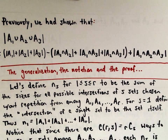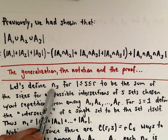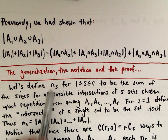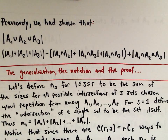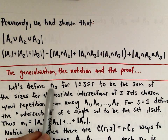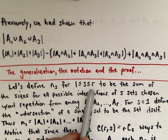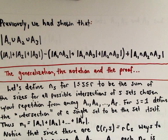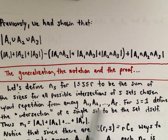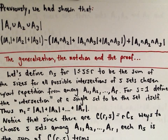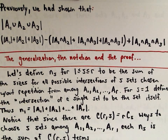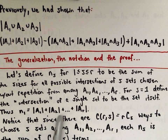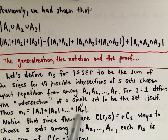Let's look at some notation. We saw n1 minus n2 plus n3 minus n4 etc. in the previous video. We're going to define n sub s for values of s from 1 to r as the sum of the sizes of all possible intersections of s sets chosen without repetition from among the sets A1, A2 through A_r. For s equals 1, the intersection of a single set is just the set itself, so n sub 1 would be the number of elements in A1 plus A2 plus dot dot dot plus A_r.